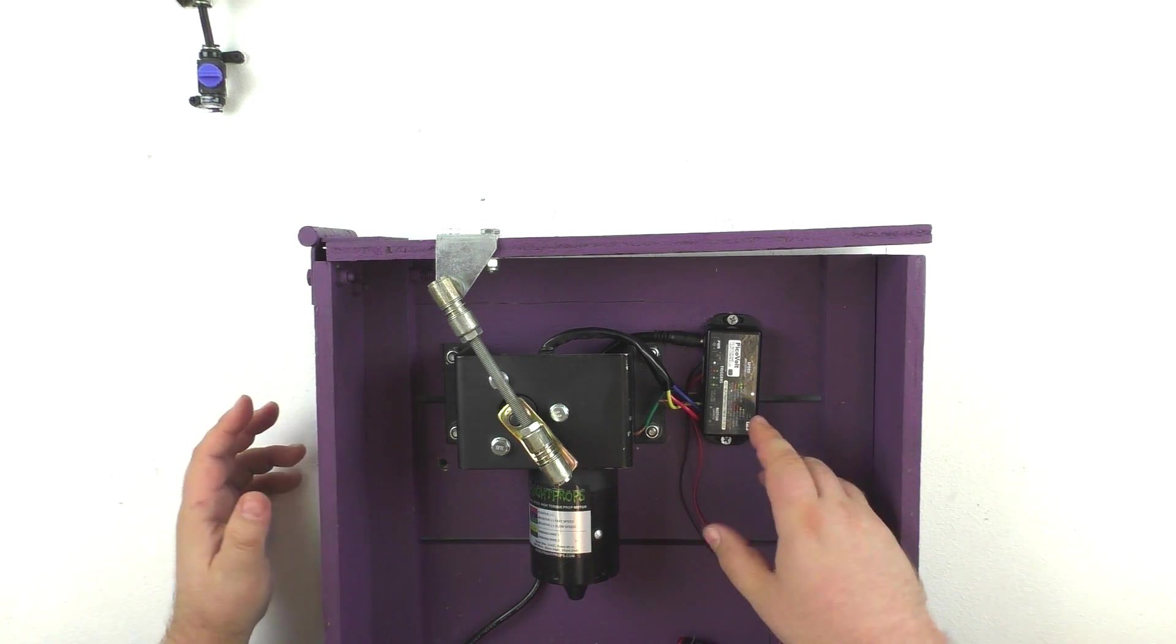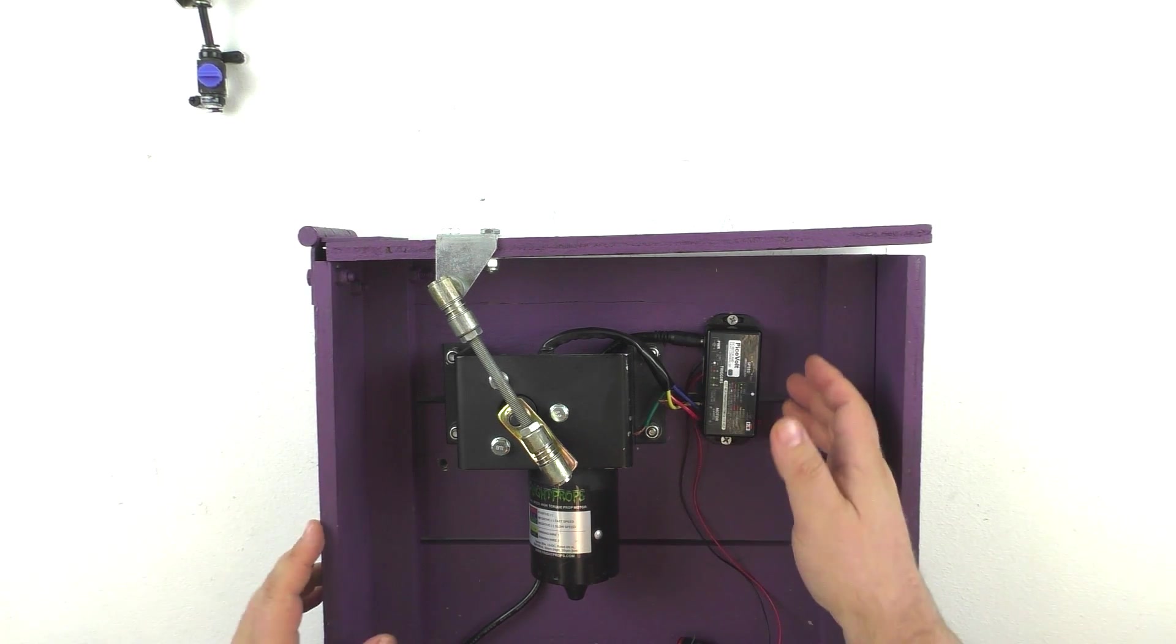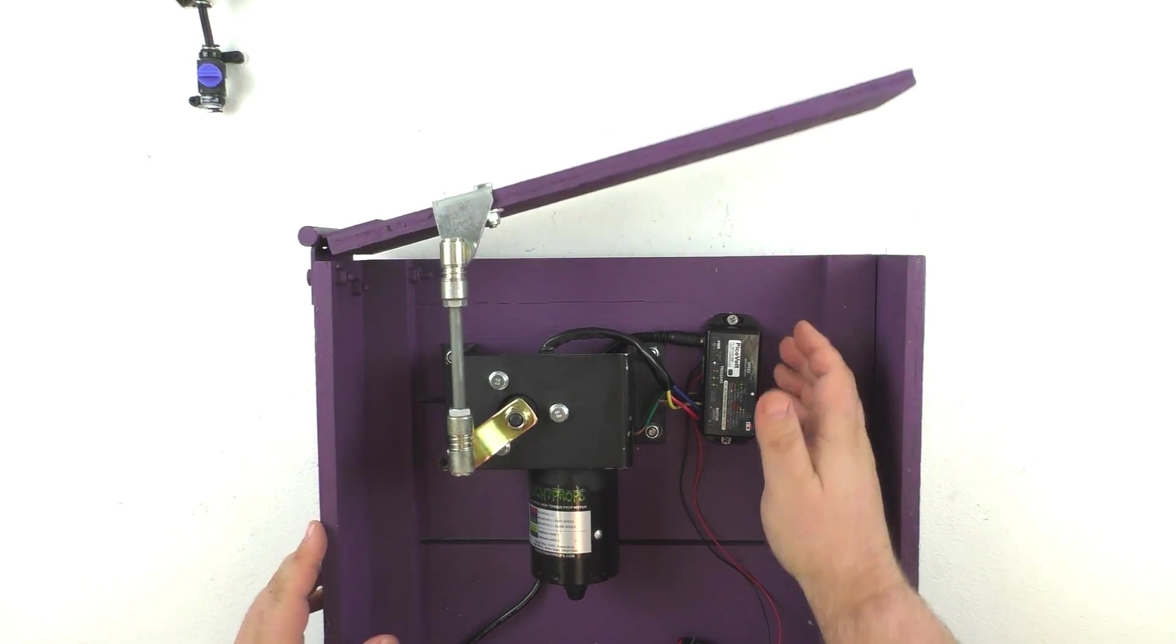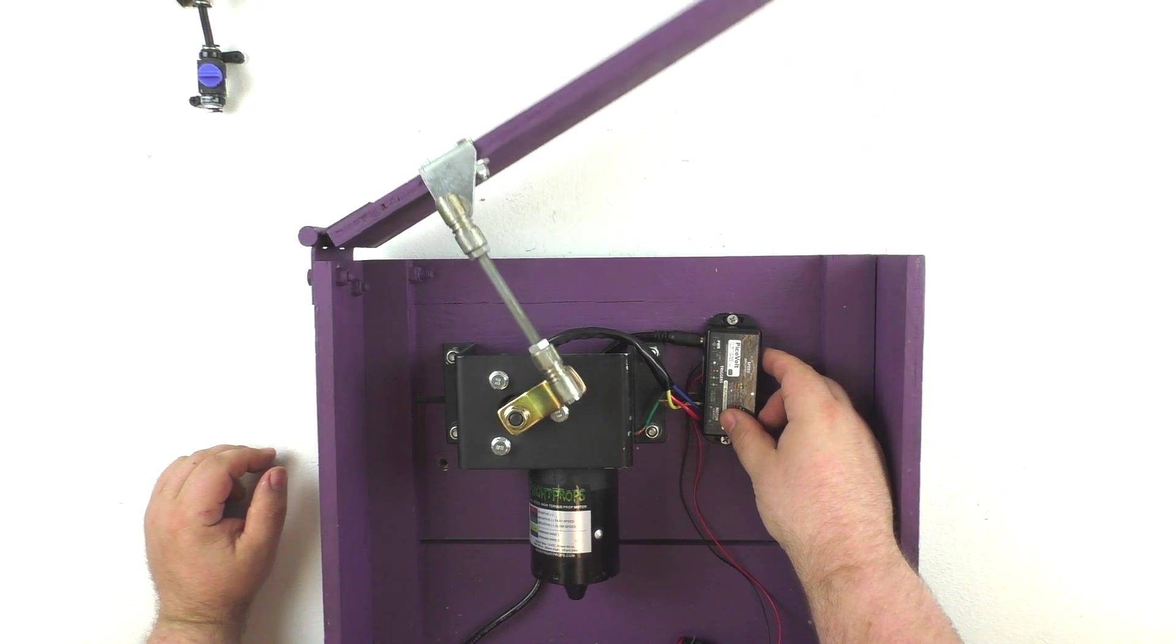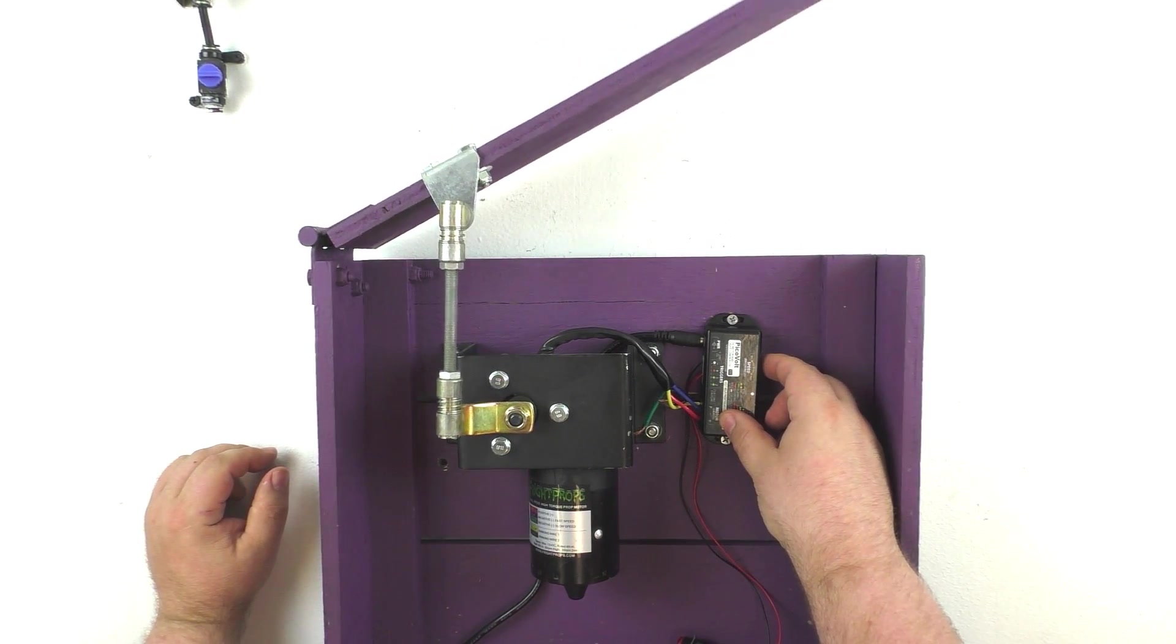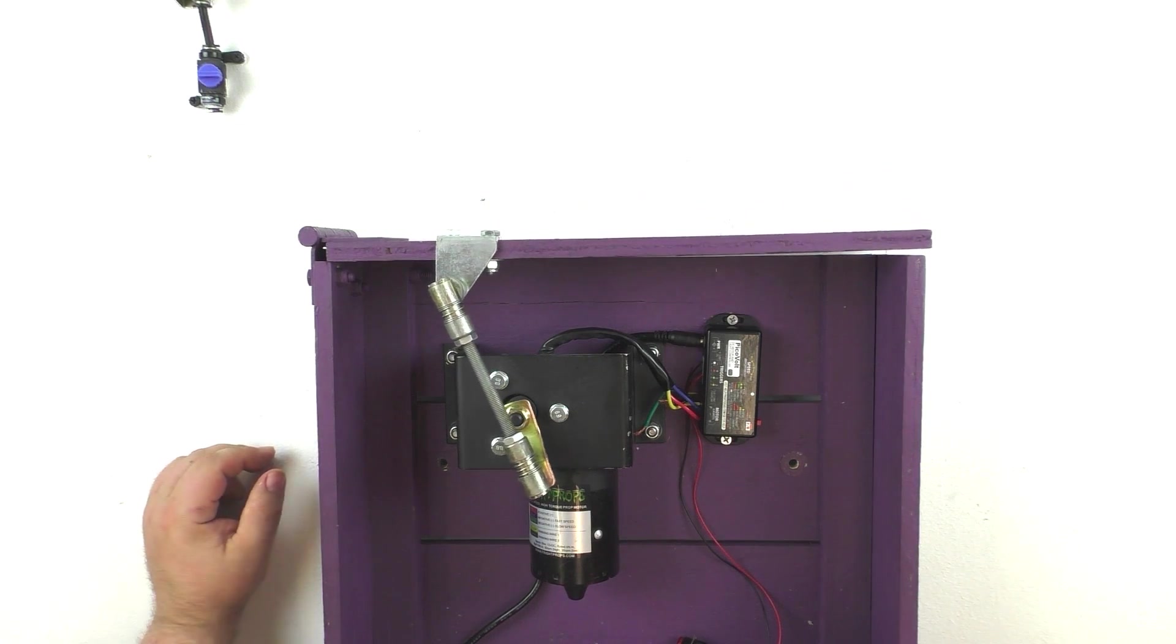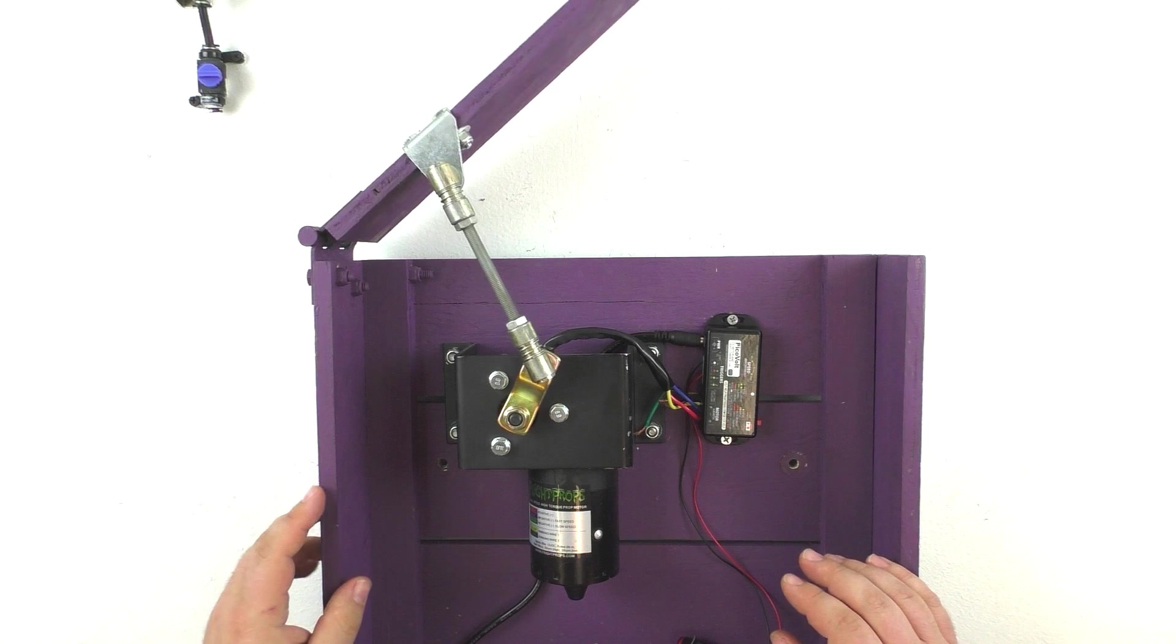On its most basic level, the PikaVolt is a speed and direction controller. So if we just power the PikaVolt up and turn the dial, we can start the motor going in any direction we choose and we can set the speed. We can go fast or we can dial it down and have it go slow. So you could just use the PikaVolt to set the speed of your motor if you wanted to create a prop where the lid opens slowly.